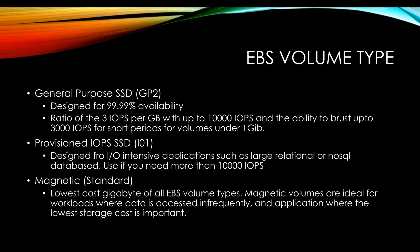Magnetic is the standard lowest-cost per gigabyte of all EBS volume types. Magnetic volumes are ideal for workloads where data is accessed infrequently, and for applications where the lowest storage cost is important.